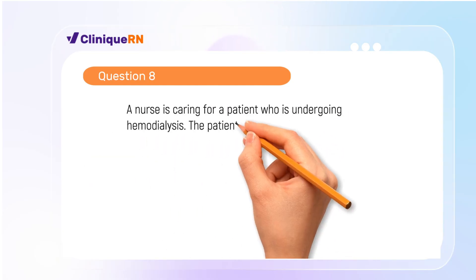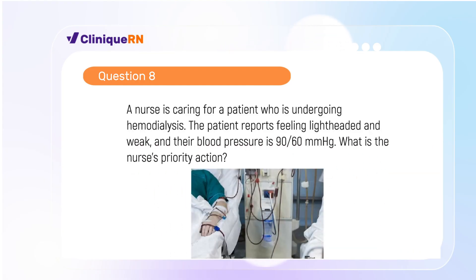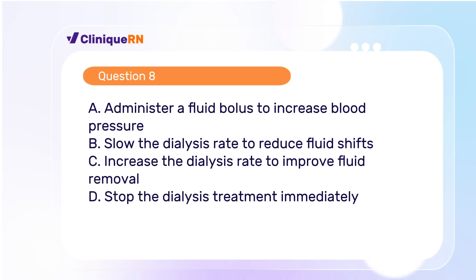Question 8. A nurse is caring for a patient who is undergoing hemodialysis. The patient reports feeling lightheaded and weak, and their blood pressure is 90 over 60 mmHg. What is the nurse's priority action? A. Administer a fluid bolus to increase blood pressure. B. Slow the dialysis rate to reduce fluid shifts. C. Increase the dialysis rate to improve fluid removal. D. Stop the dialysis treatment immediately.